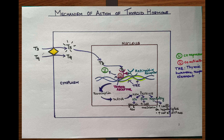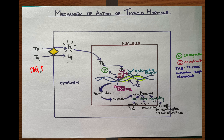T4 and T3 travel in the plasma with the help of plasma proteins, and the most important plasma proteins are the thyroid binding globulins. These represent the maximum bulk of the proteins important for transport of T3 and T4. The levels of these plasma proteins can vary in various physiological or pathological conditions — like in pregnancy, the level goes pretty high, so more plasma-bound iodine levels will be elevated.